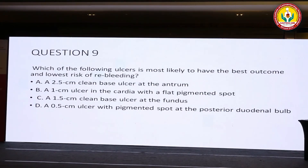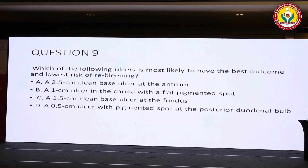Question 9: which of the following ulcers is most likely to have the best outcome and the lowest risk of re-bleed? Option A: a 2.5 cm clean-based ulcer at the antrum. Option B: a 1 cm ulcer at the cardia with a flat pigmented spot. Option C: a 1.5 cm clean-based ulcer at the fundus. Option D: a 0.5 cm ulcer with a pigmented spot at the posterior wall. Which ulcer has the least risk of re-bleed?